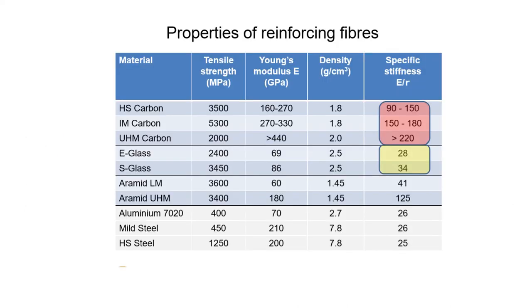Here in the table, the properties of reinforcing fibers have been compared: tensile strength, Young's modulus, density and specific stiffness. The specific stiffness of HS carbon, IM carbon, UHM carbon, E-glass and S-glass are quite notable.